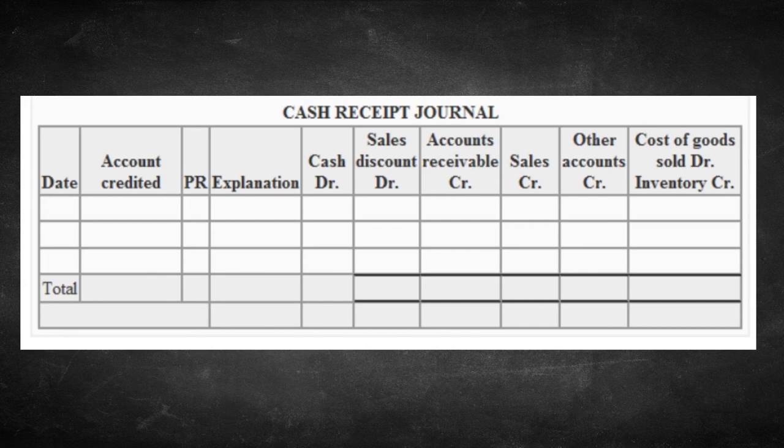Later, the amounts in the journals would be posted to the designated accounts located in the general ledger. Examples of accounts include sales, rent expense, wages expense, cash, loans payable, and so many others. Each account's balance had to be calculated, and the account balances were used in the company's financial statements.